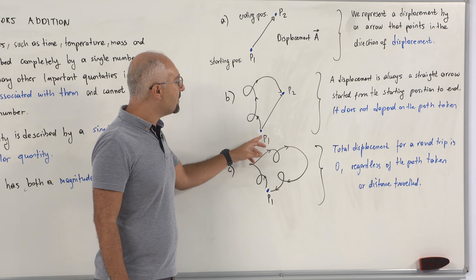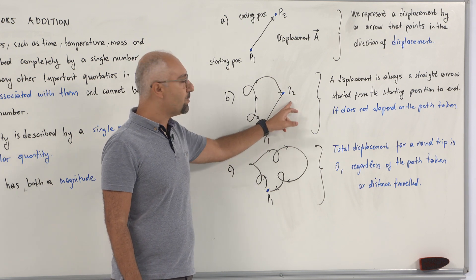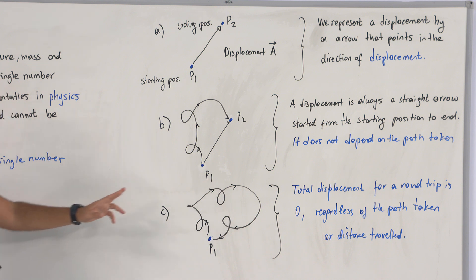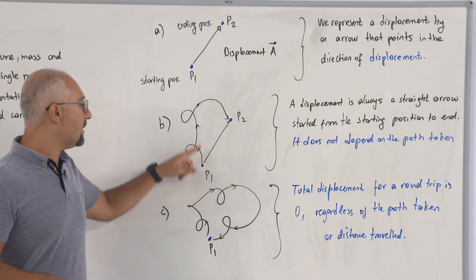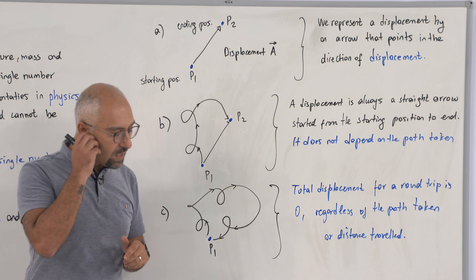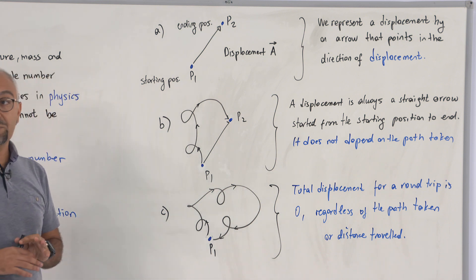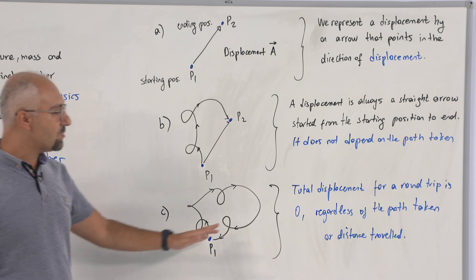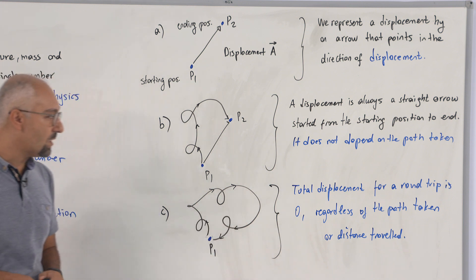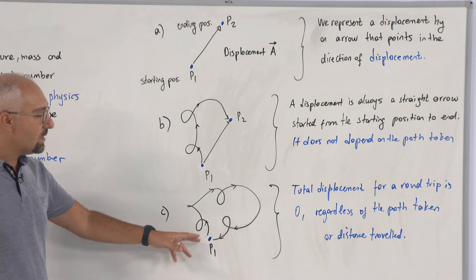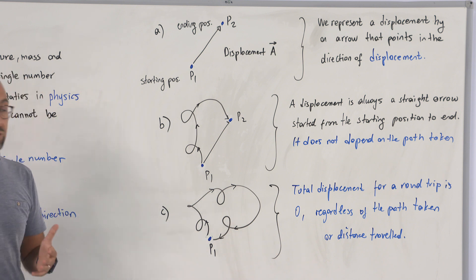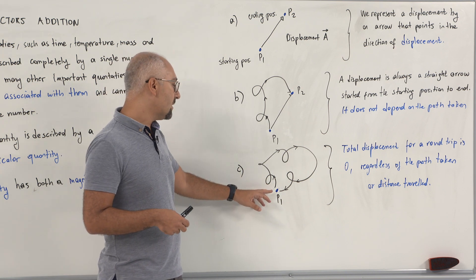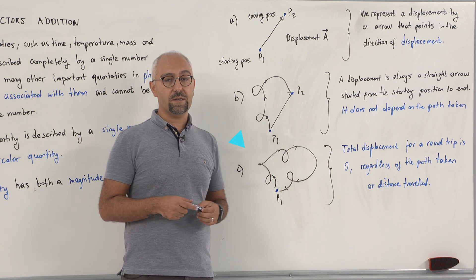In another representation from point 1 to point 2, displacements are always shown as straight arrows. A vector does not depend on the path taken, only on the arrow itself. In the final example, the total displacement for a round trip is zero because the starting and ending point are the same, regardless of the path taken or distance travelled.